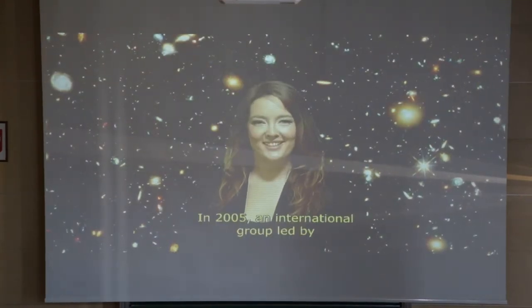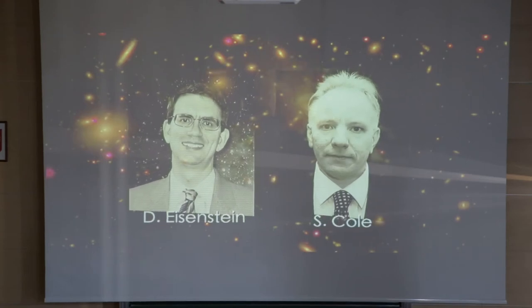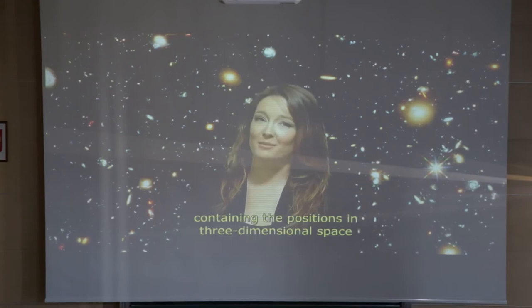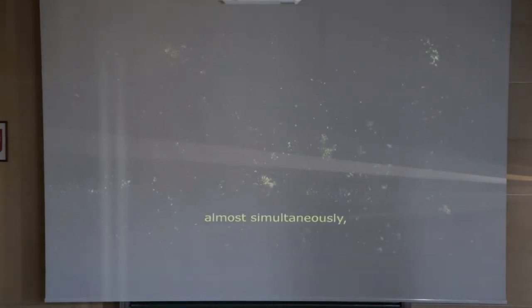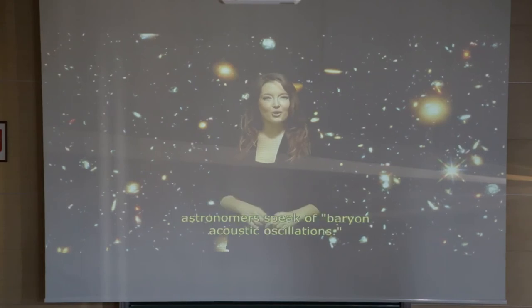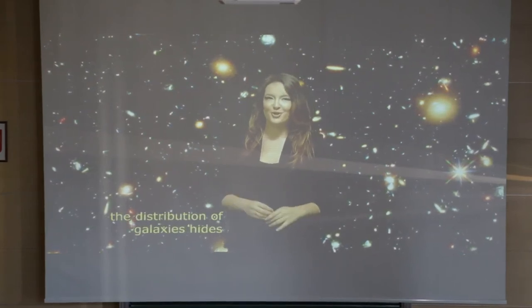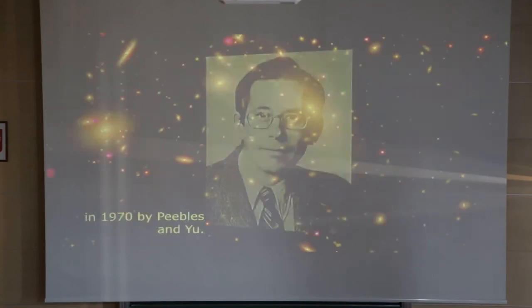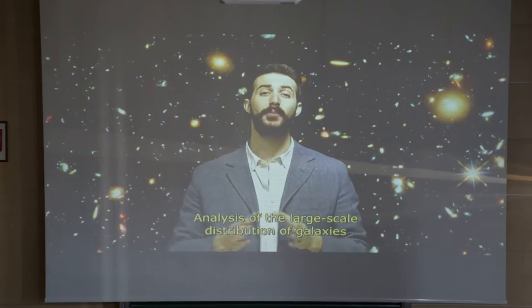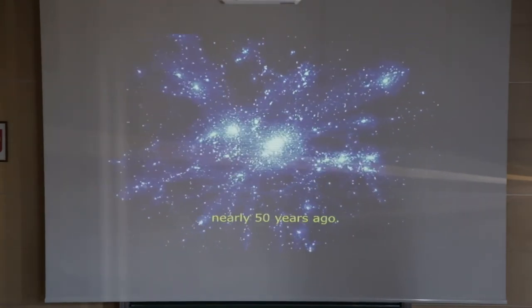In 2005, an international group led by American astronomer Daniel Eisenstein and another group led by British astronomer Shaun Cole studied in detail large catalogs containing the three-dimensional positions of hundreds of thousands of galaxies in enormous volumes. Both groups discovered, almost simultaneously, a peculiarity in the distribution of galaxies - what astronomers call baryonic acoustic oscillations - a signature whose existence had already been postulated in 1970 by Peebles and Yu. The analysis of how galaxies are distributed at large scale allowed us to detect this subtle information that cosmologists had been predicting for almost 50 years.